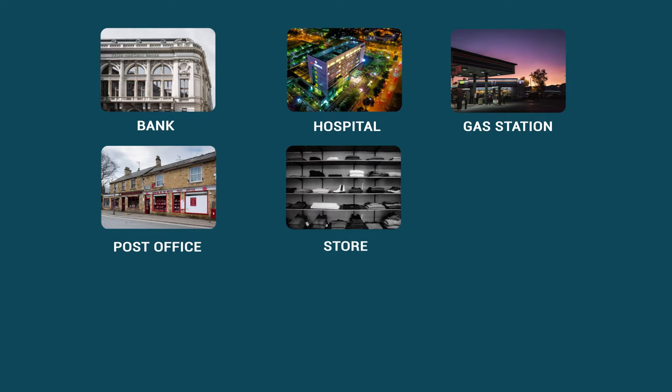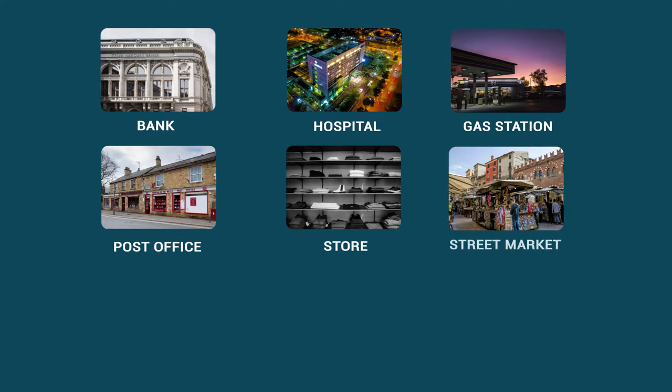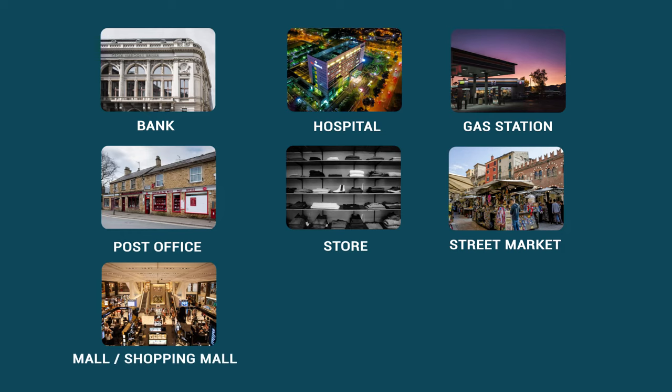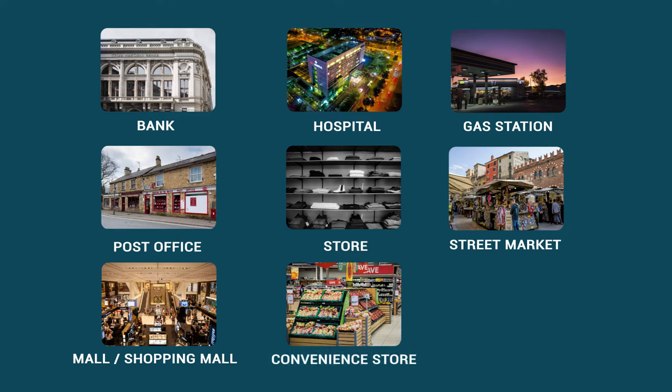Store — a store is where you can buy specialized items, for example, a computer store or a shoe store. Street market — a street market is where individual vendors sell their goods to the public. Mall or shopping mall — a mall is a place where there are lots of shops or stores together. Convenience store — a convenience store is where you can buy things 24 hours a day.